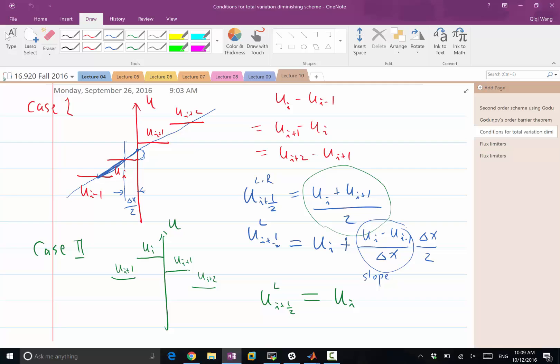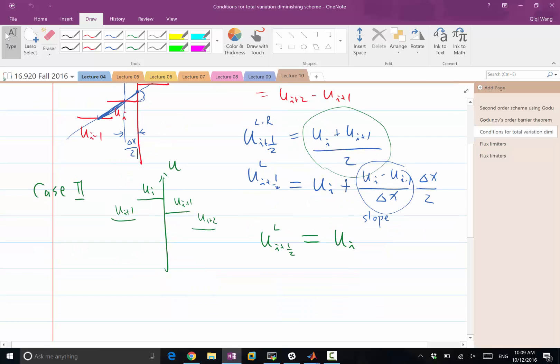Yes, we are trying to reconstruct the value of u at the interfaces left and right interfaces so that we can apply the Godunov scheme to compute the flux at the interface. So once we can have u left and u right at the interface, applying what we studied in the last lecture is going to give us a numerical flux.